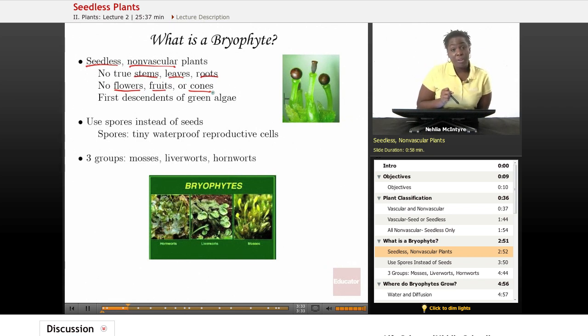Now the bryophytes are important because they were the first descendants of the green algae, which is the common ancestor for all plants. Bryophytes also play a big role in helping to maintain our environment, which we'll discuss later.